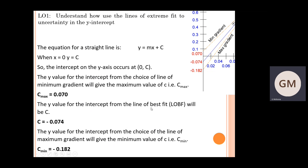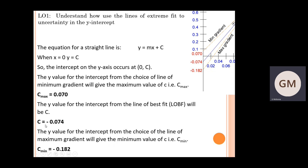The y-value for the intercept from the line of best fit gives you c, which in this graph equals minus 0.074, as seen in the top right corner. The y-value for the intercept from the line of maximum gradient gives the minimum value of c — c_min — which equals minus 0.182, as also seen in the graph. Take a new page and copy down the graph and notes.